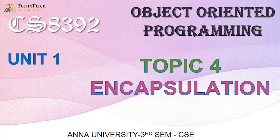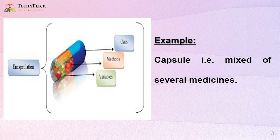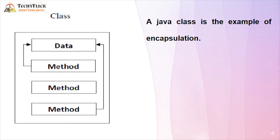CS 8392, Unit 1, Topic 4: Encapsulation. Encapsulation in Java is a process of wrapping code and data together into a single unit. Consider this example: it is a capsule that is mixed of several medicines — this is a best example for encapsulation. This example is for a Java class — encapsulation is the class which is wrapped by data and methods.